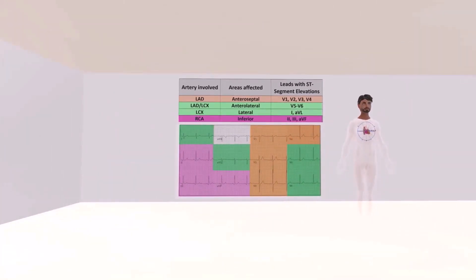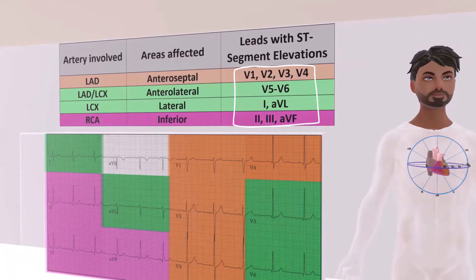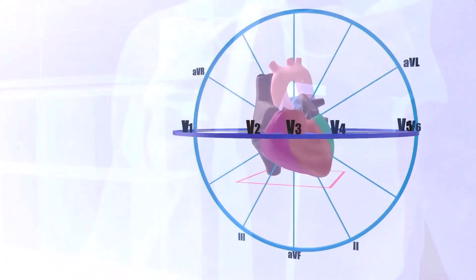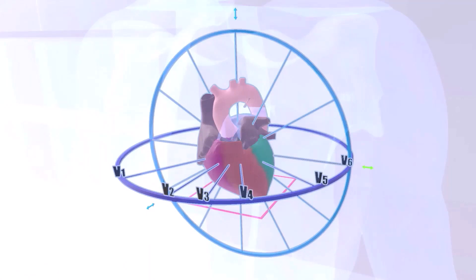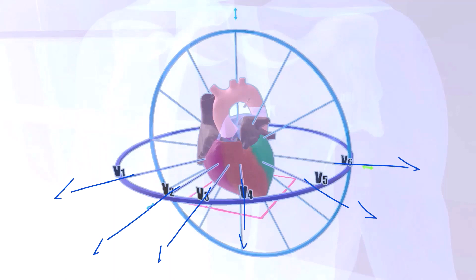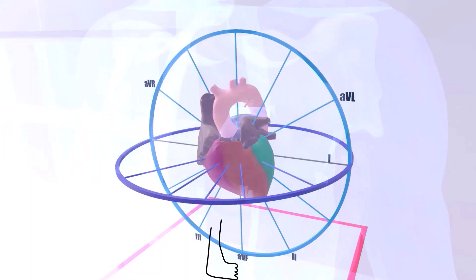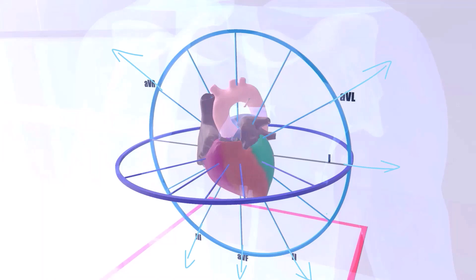Now let's explain what V1, V2, etc. is all about. These spokes represent the leads of the ECG. We see V1, V2, V3, V4, V5, and V6 — the leads which point horizontally away from the heart. Then we have AVR, AVL, and AVF, where R stands for right, L for left, and F for foot, along with leads 1, 2, and 3, which are along the frontal plane.